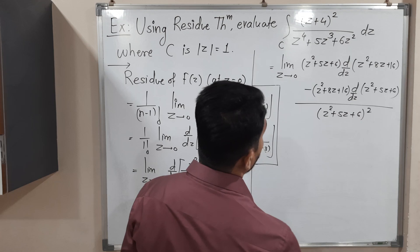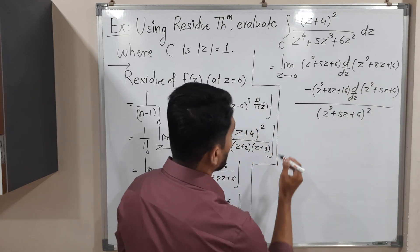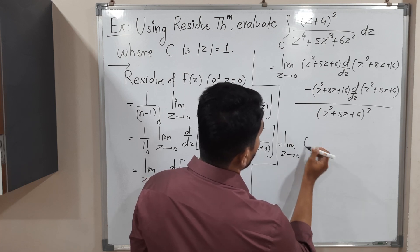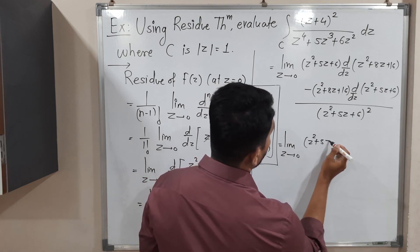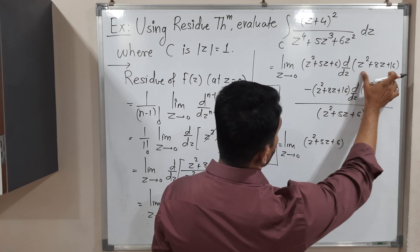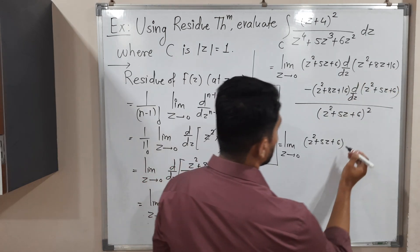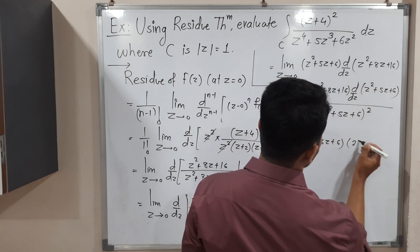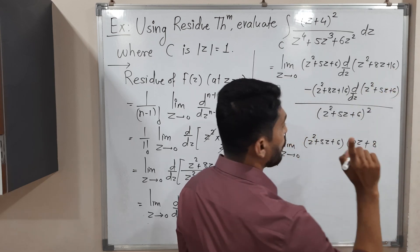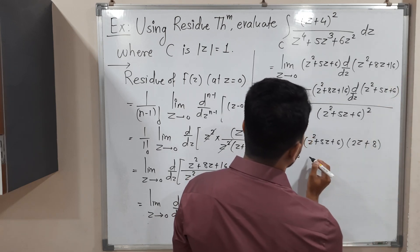Now finding the individual derivatives: the derivative of (z² + 8z + 16) is 2z + 8, since the derivative of z² is 2z, the derivative of 8z is 8, and the derivative of the constant 16 is 0. Similarly, the derivative of (z² + 5z + 6) is 2z + 5.